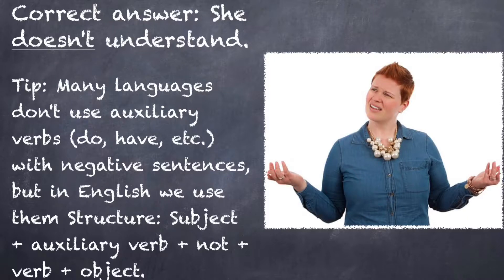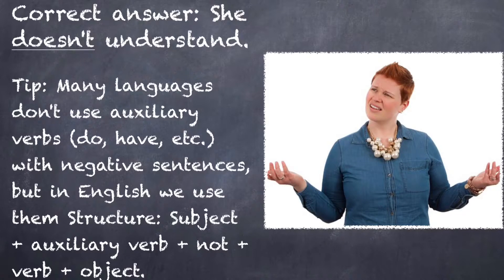The correct answer is 'she doesn't understand.' Many languages, including Spanish, don't use the auxiliary verb in negative sentences, but in English we do. An auxiliary verb is an important concept in English — it's a verb that helps another verb, for example: 'do understand,' 'do not understand.' You just have to know the structure: auxiliary verb plus 'not' plus the verb. To get past this mistake you just have to recognize it, which hopefully you do now, and then study to get past it.